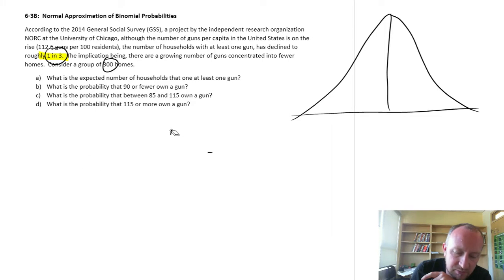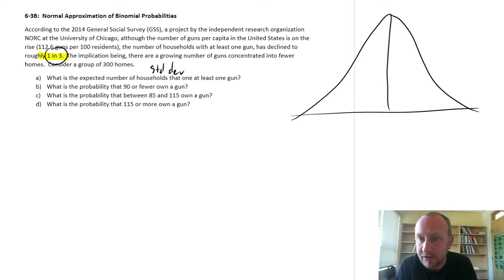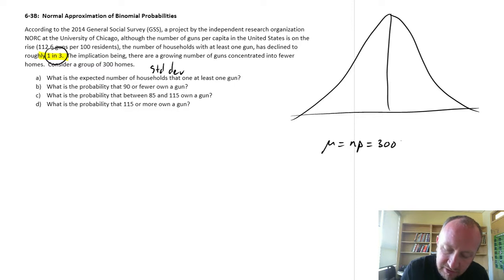So let's get into our first problem. What is the expected number of households that own at least one gun? We'll actually also need to get the standard deviation in here too, because we need the parameters of our normal distribution that we're going to use. So our expected number, so our mu, our average number of households, this is just n times p. We have just actually calculated that: 300 times 0.33. So our expected number, our average number of households in this 300 homes that we're considering, would be 100 of those homes we would expect to hold a gun. At least one gun.